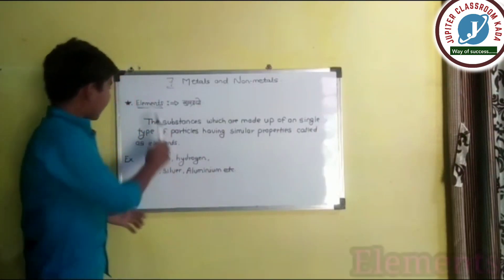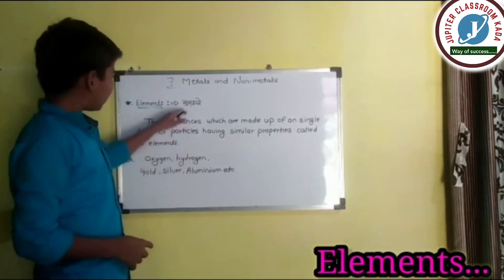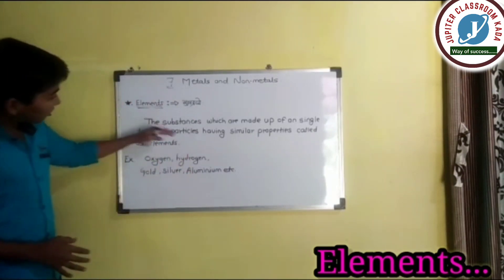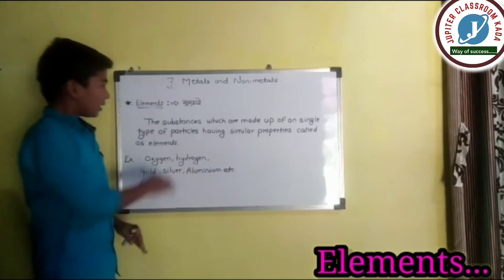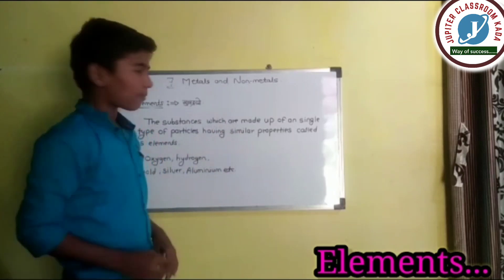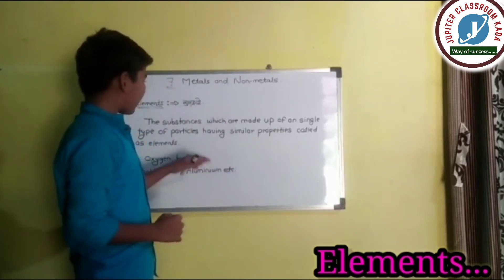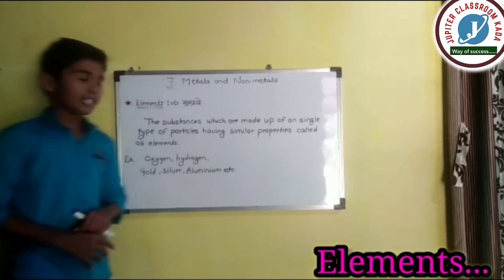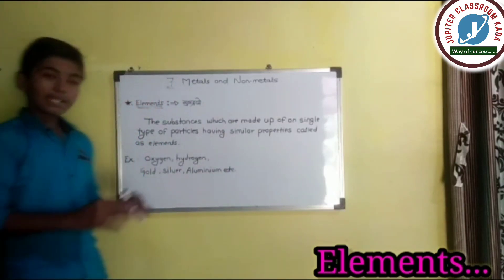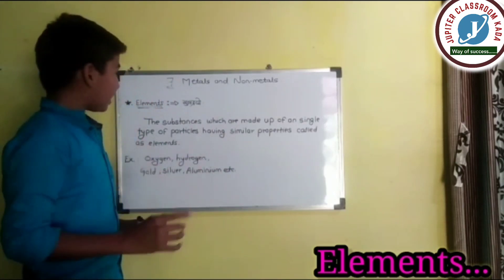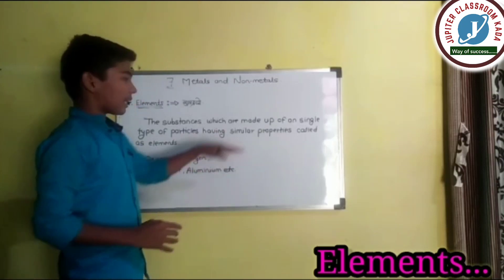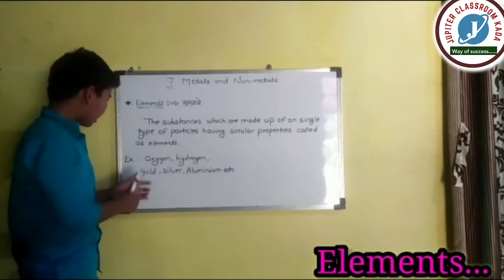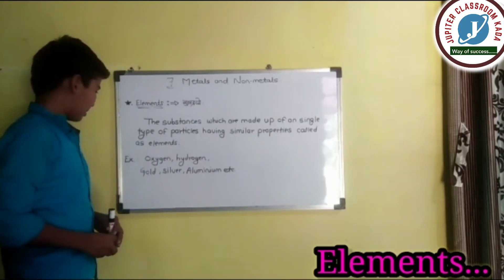That's the name of elements. The elements — definition for elements: the substances which are made up of a single type of particles having similar properties are called as elements. Meaning, such substances which have similar properties and are made up of a single type of particles are called elements.